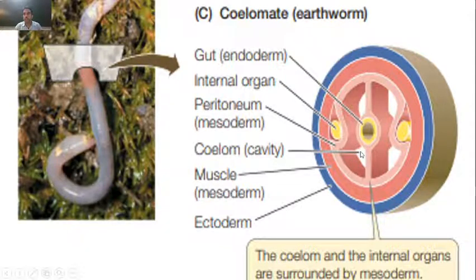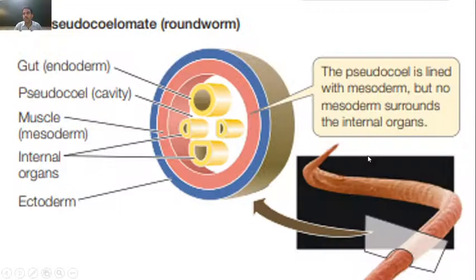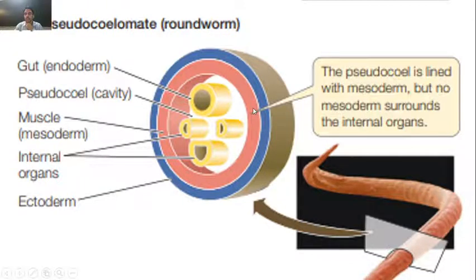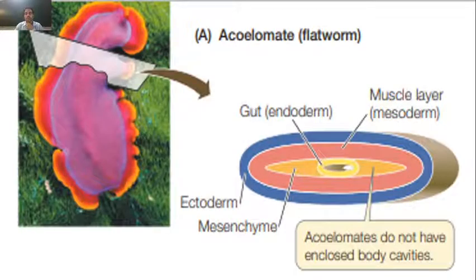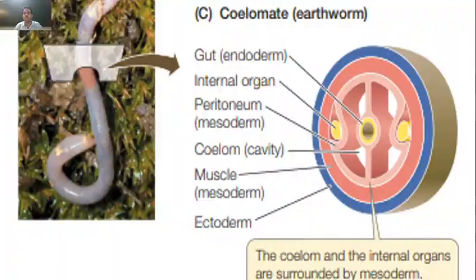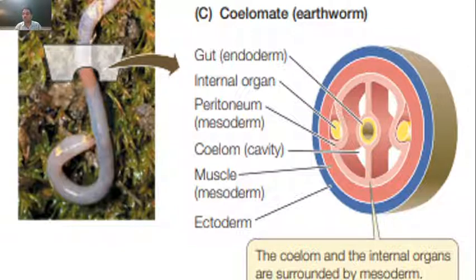This cavity is also surrounded by mesoderm on both sides. In the pseudocoelomate diagram, the gut is not surrounded by mesoderm — mesoderm is only on the outside of the cavity. In this way, we can differentiate three types of animals based on coelom: acoelomate, pseudocoelomate, and coelomate.